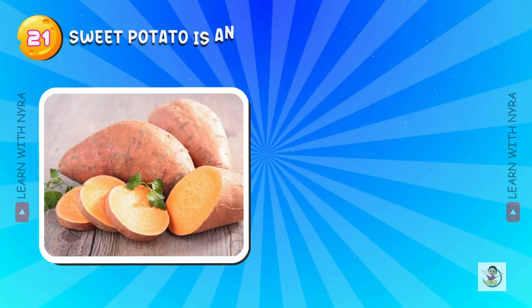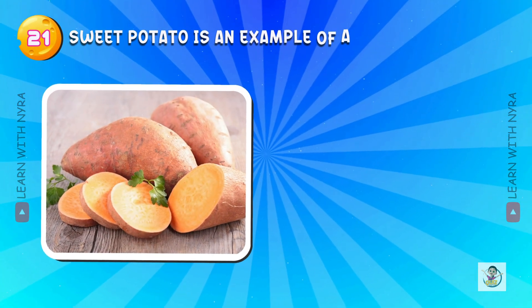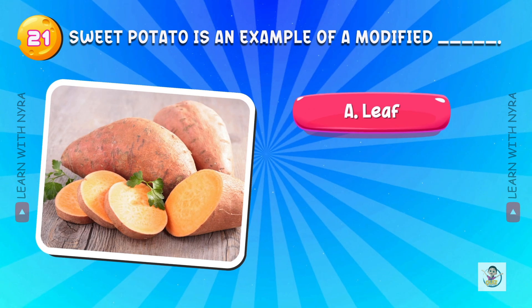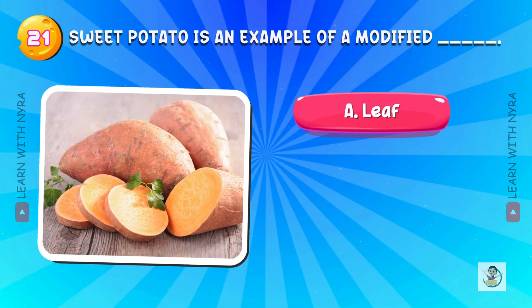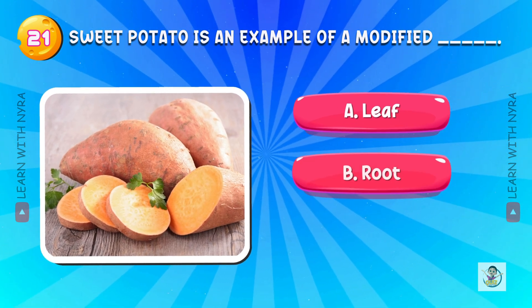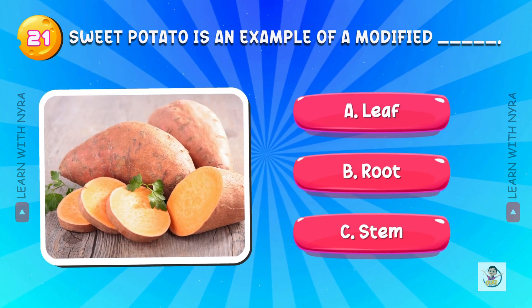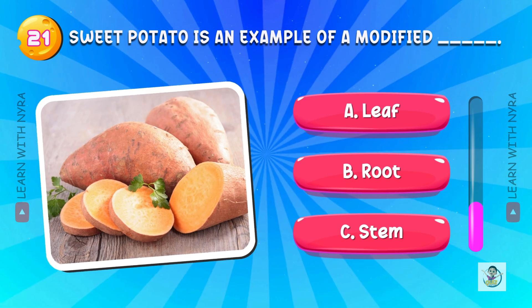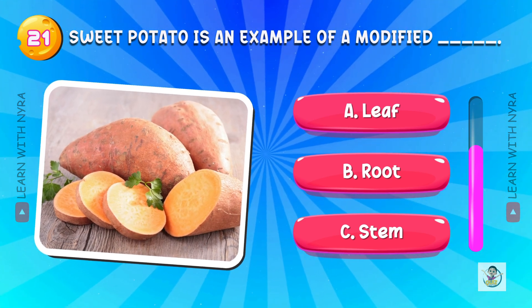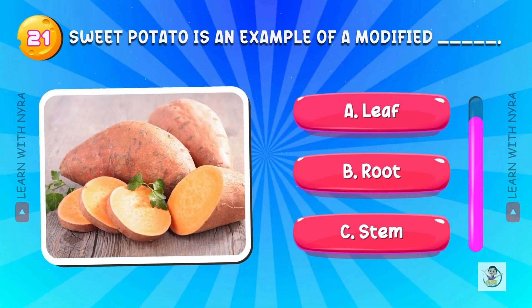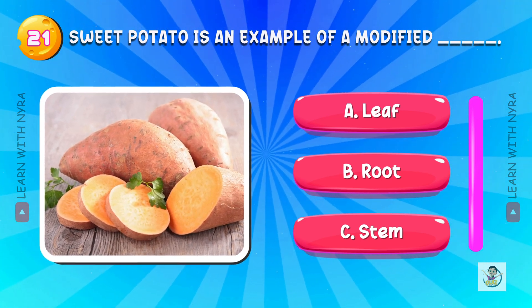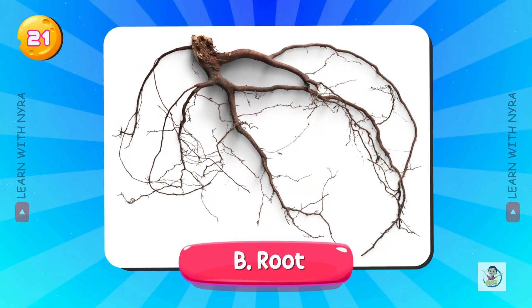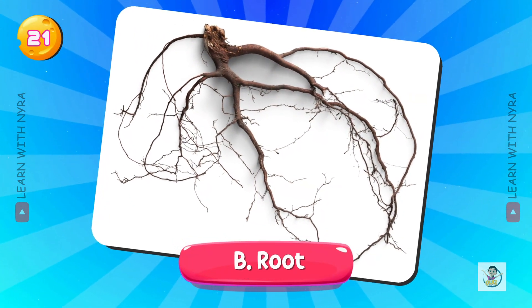Sweet potato is an example of a modified A. Leaf, B. Root, C. Stem. And the answer is B. Root.